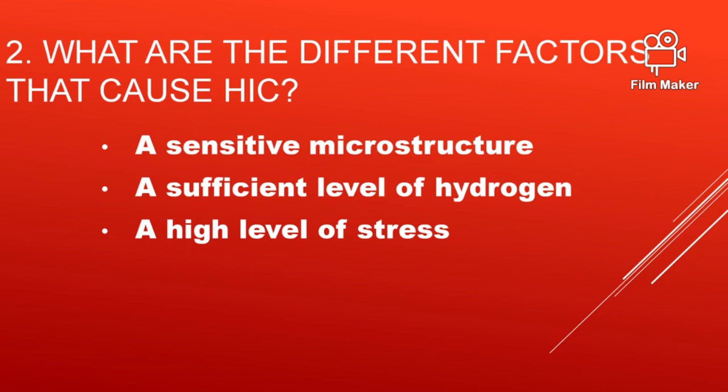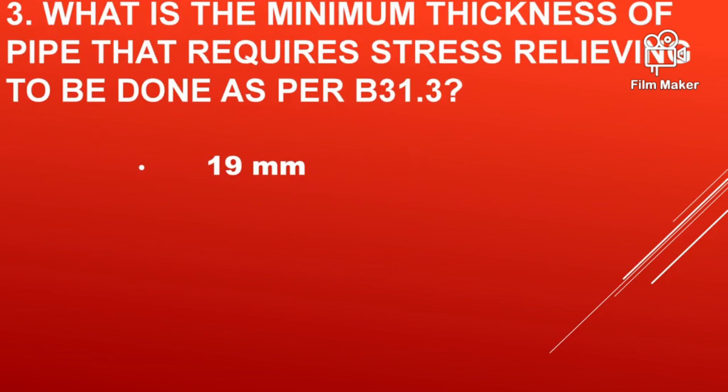What are the different factors that cause HIC, that is Hydrogen Induced Cracking? Only sensitive microstructure, meaning martensitic structure; then sufficient level of hydrogen, normally 15 ml per 100 gram weld metal; then high level of stresses.